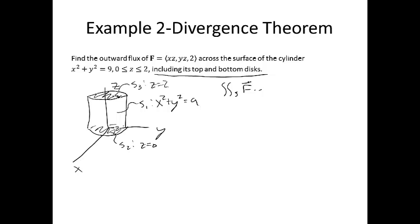So if you were to calculate the surface integral of the vector field directly, you would have to calculate the surface integral over each of the pieces and add them all together. We did a problem fairly similar to this at the end of the video on surface integrals of vector fields. But since S is a closed surface, we can use the divergence theorem — instead of calculating the surface integral directly, we do the triple integral of the divergence of the vector field over the region E enclosed by the surface.